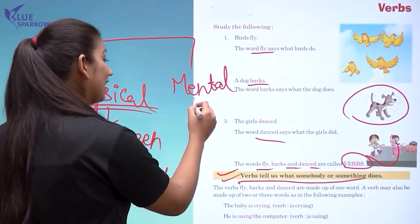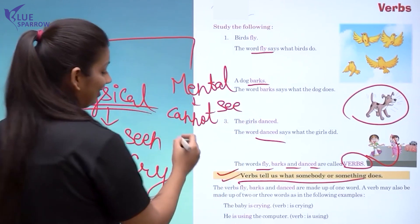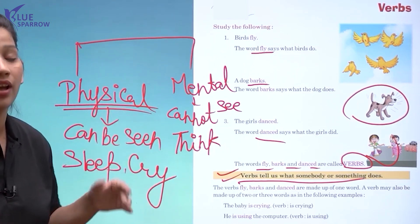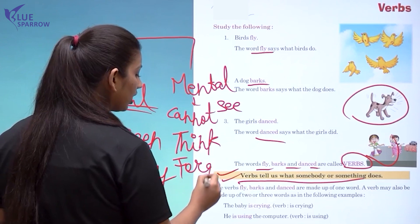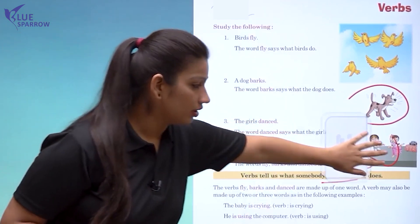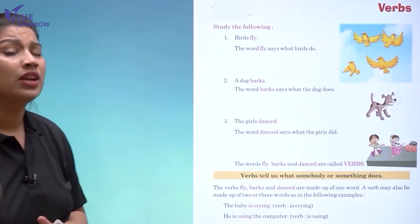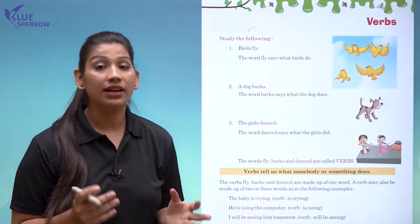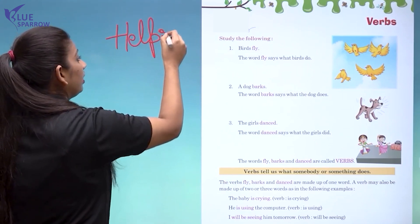Some verbs are mental, which you cannot see. For example, 'think' — you may be thinking, but you can't see that. 'Think' is also an action word, it is a verb, but you can't see it — that is a kind of mental verb. 'Forget' — you cannot see that, but it is a verb. So we got to know that verbs can be physical or mental, and verbs are the words that tell us about the noun.